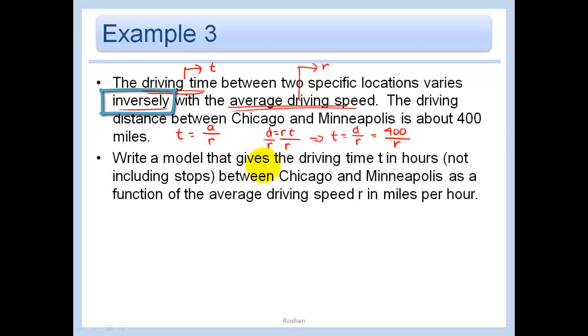So write a model that gives the driving time in hours between Chicago and Minneapolis as a function of the average driving speed R in miles per hour. Well, that's just T equals 400 over R. That's about it.